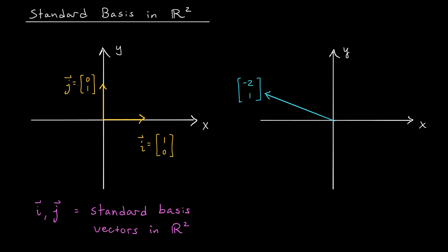Now, it turns out that in R2, you can actually form any vector you like using combinations of two very special vectors, which we're going to refer to as I and J. I is the vector 1, 0. It points in the X direction and has length 1. J is the vector 0, 1. It has the same length but points in the positive Y direction. These two vectors are known as the standard basis vectors in R2. And like I said, they can be used to form any other vector you like.